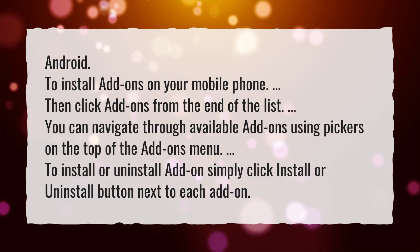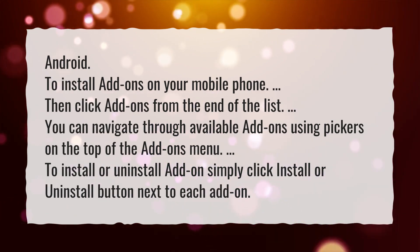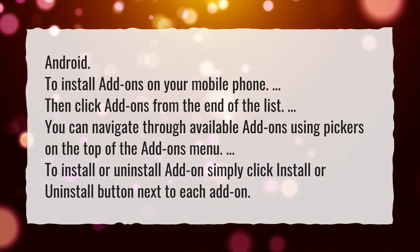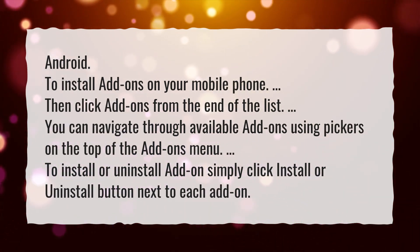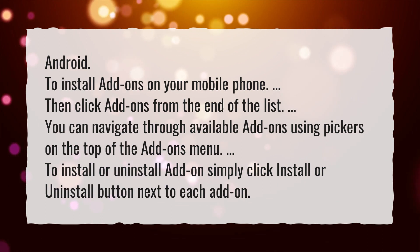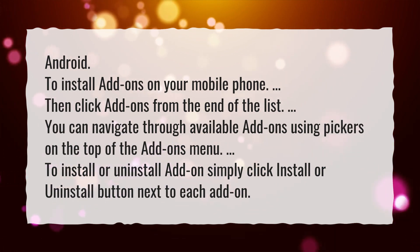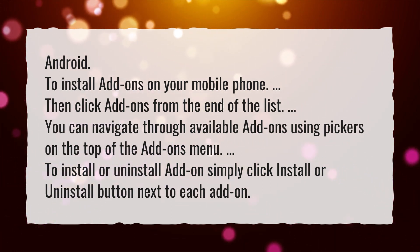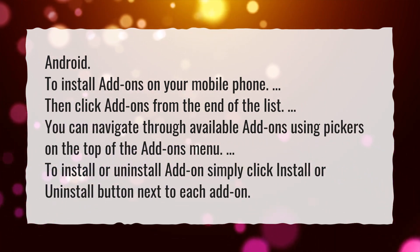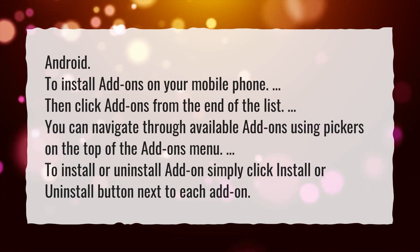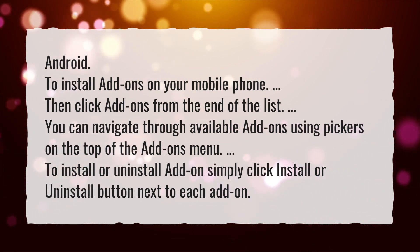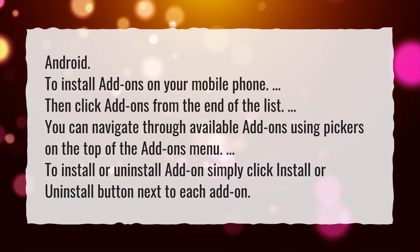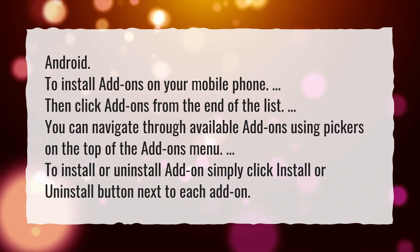To install add-ons on your mobile phone, click add-ons from the end of the list. You can navigate through available add-ons using pickers on the top of the add-ons menu. To install or uninstall add-ons, simply click the install or uninstall button next to each add-on.